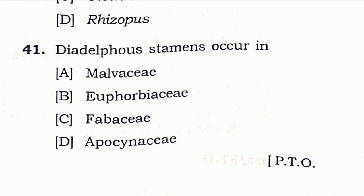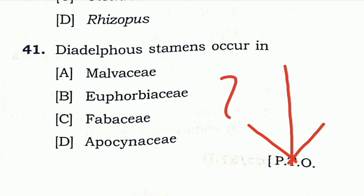Question 41: Diadelphous stamens occur in — Malvaceae, Euphorbiaceae, Fabaceae, or Hypericaceae? I don't know this answer — if you know it, please let me know in the comment section. Thanks for watching. In the next video, we will discuss the remaining questions. If you are a student of life science or biological science, this channel is for you — please don't forget to subscribe. See you next time.